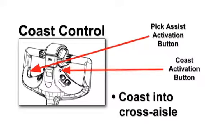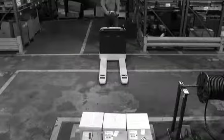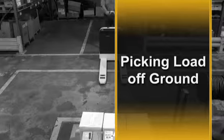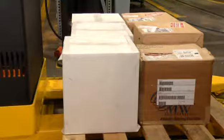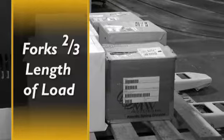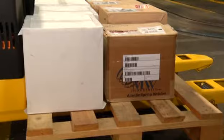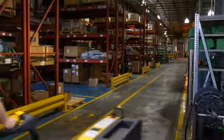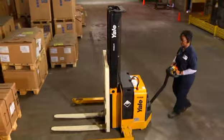Some walkie rider trucks are equipped with a coast control feature to facilitate order picking. With this feature, the truck will coast a few feet before it stops. Only use the coast control when you are operating from a walking position. Be especially careful when using this feature, because the brake is not applied immediately but after the truck coasts a few feet. When using coast control, make sure it is used only on a level surface, free of debris. Do not allow the truck to coast into a cross aisle or be used in pedestrian walkways. Make sure you walk to the side of the coasting truck.